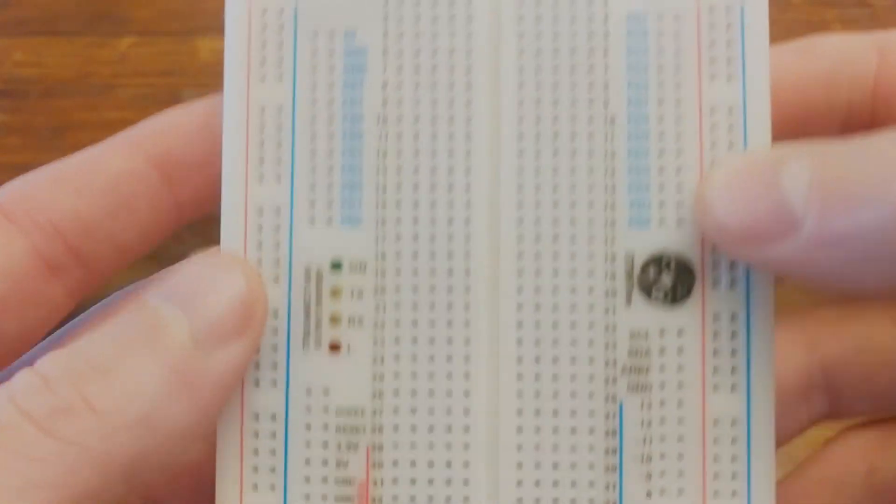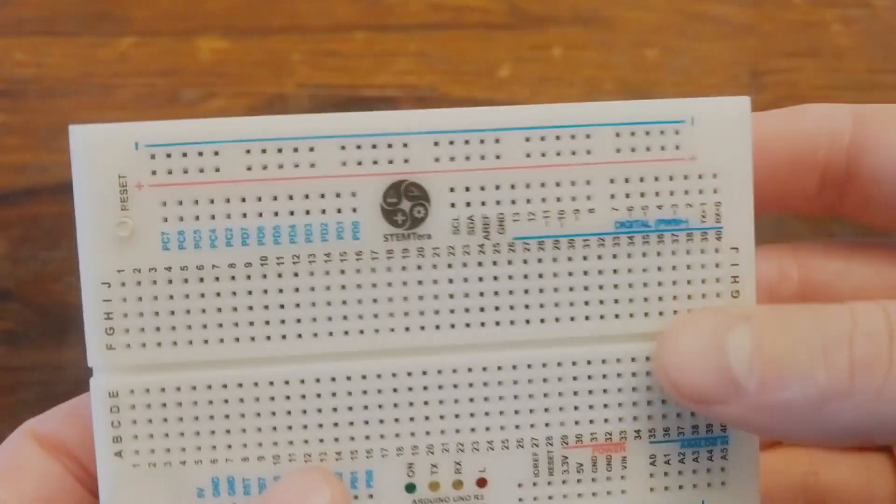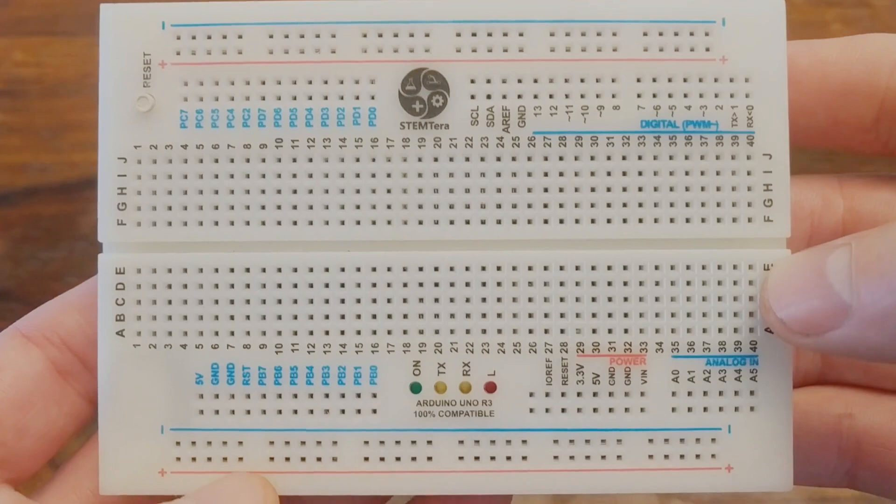And the pin breakouts for the 32U2 are accessible on the breadboard in these two headers if you ever want to access those.